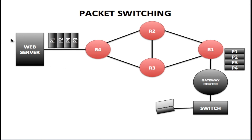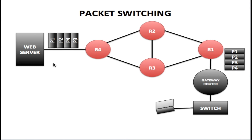When the web server receives these packets, the first thing it does is examine them to make sure they are in order. In this example, P1, P2, and P4 arrive before P3, but this is not a problem — the web server rearranges the packets in the order they were sent. This is how packet switching works: routers decide the best route to get packets to their destination as quickly as possible.